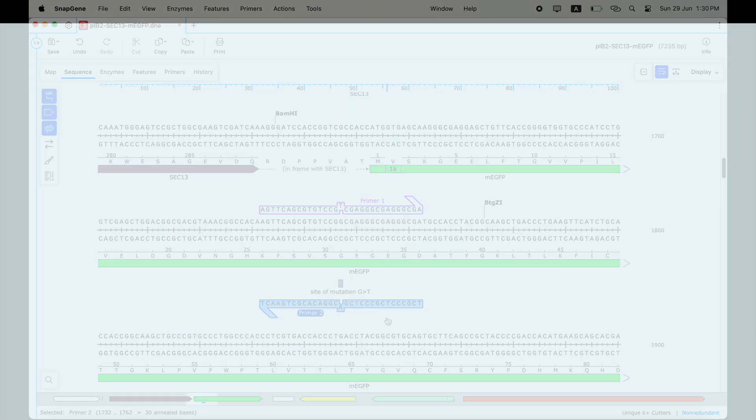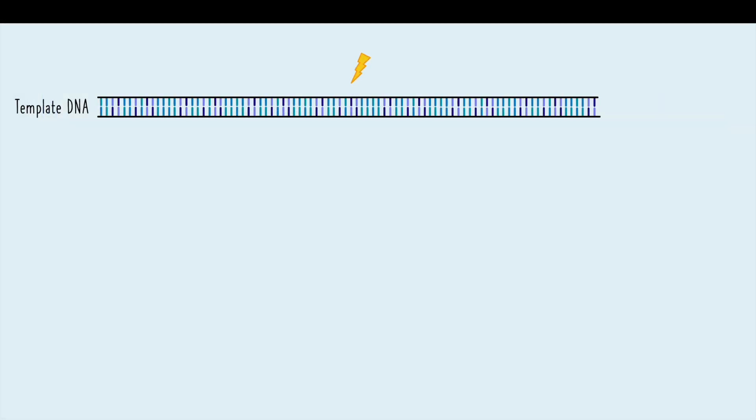Coming back, introducing a mutation into a linear DNA product is slightly different. It can be achieved with site-directed mutagenesis by overlap extension. To do this, you'll need to run several PCR reactions using four primers that amplify the regions flanking your mutation sites.